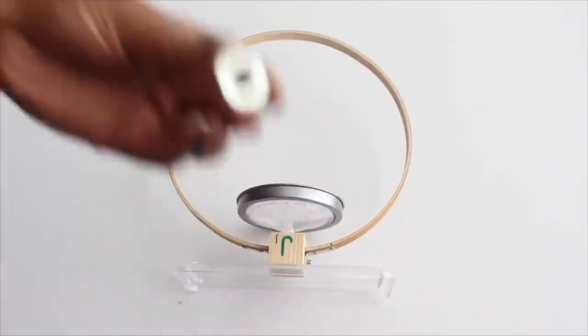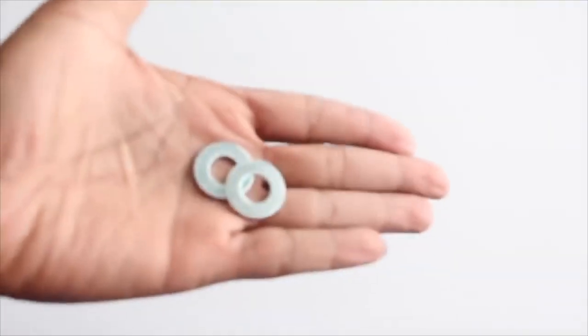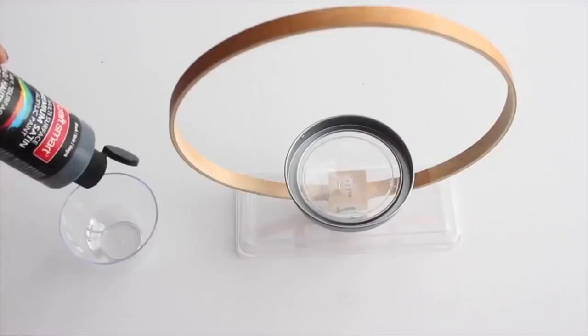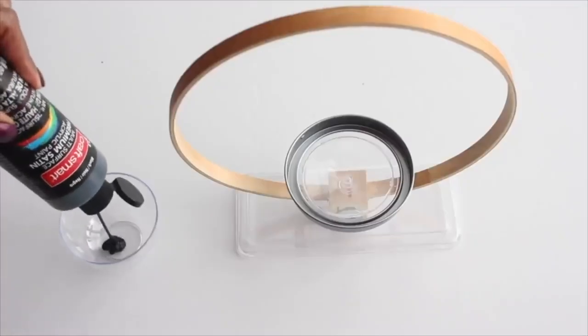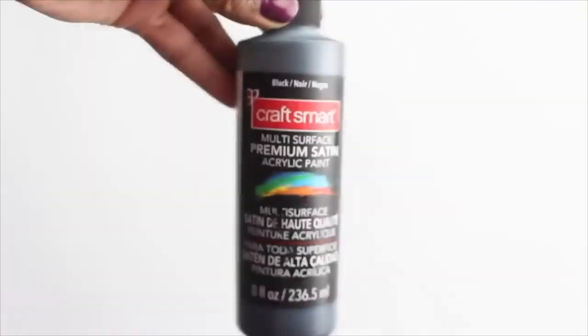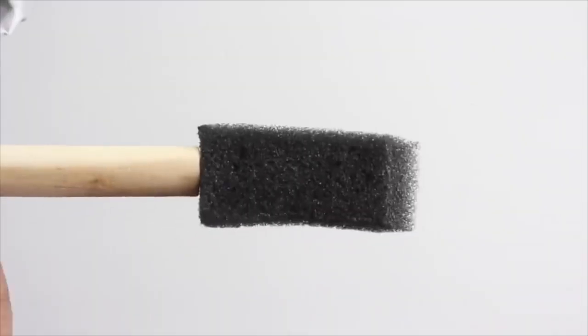To add a little bit of detail I decided to glue washers to the front and back of the block. Now let's paint. Before I start spray painting I'm going to take black craft paint and a sponge brush and paint the entire piece.